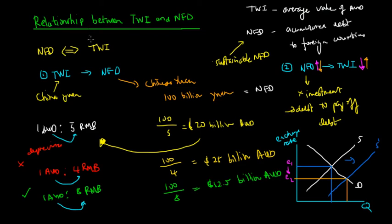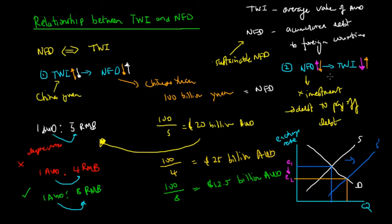To recap the two-way relationship: when our dollar appreciates against a basket of foreign currencies, the net foreign debt tends to decrease; when our trade-weighted index depreciates, our net foreign debt increases. In the second relationship, an increase in net foreign debt leads to a decrease in the trade-weighted index, and similarly, a decrease in net foreign debt leads to an increase in the trade-weighted index.